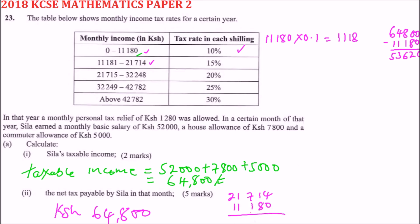The remaining balance for the second bracket is ten thousand five hundred and thirty-four. We multiply ten thousand five hundred and thirty-four by 0.15, which gives us one thousand five hundred and eighty. That is the tax for the second bracket.